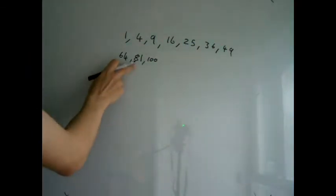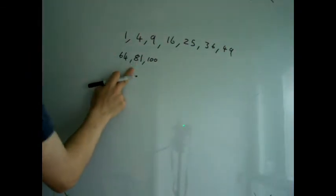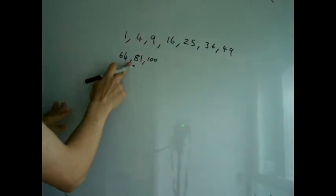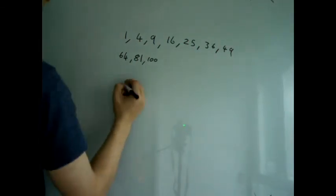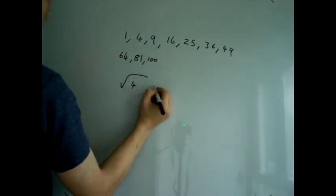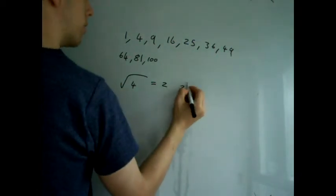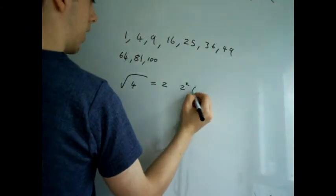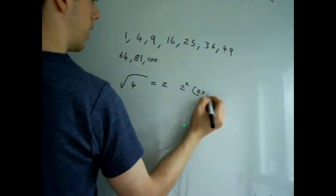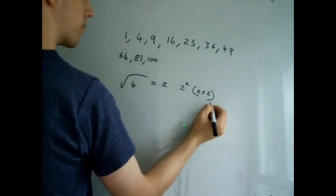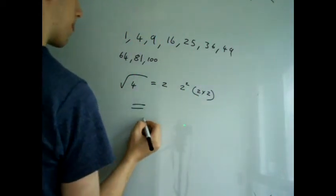The reason these are perfect squares is because the square root for each of these numbers is a whole number. So, for example, the square root of 4 equals 2 because 2 squared, i.e. 2 times 2, equals 4.